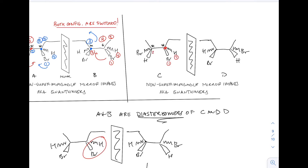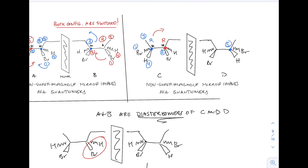Now let's look at compound C. We assign priorities one, two, three, and four, and the rotation is to the right — giving an R configuration. For the blue dot carbon, we assign one through four. Since the hydrogen is projected out at us, I'll use the hand method instead of the steering wheel analogy: number four represents the thumb pointed out at us, and going from bromine priority one to two to three requires the right hand, giving an R assignment. Moving to the next carbon, hydrogen is again pointed out at us, and closing the hand in the direction of the priorities requires the left hand — giving the S configuration.